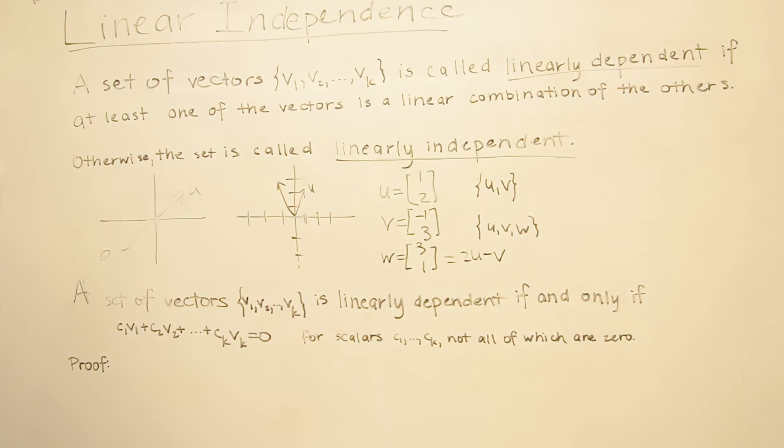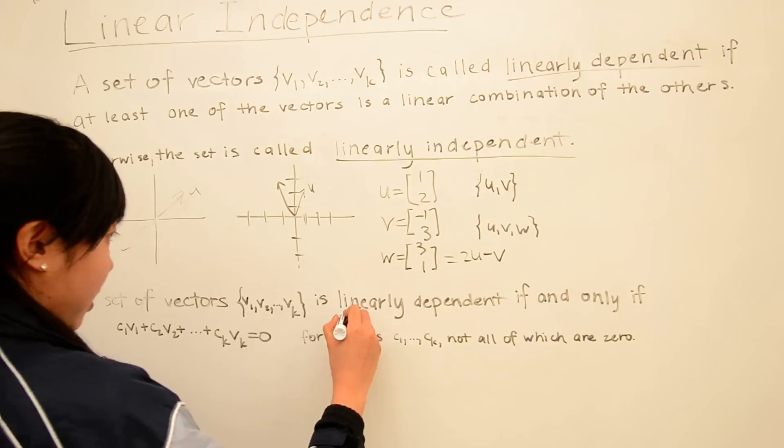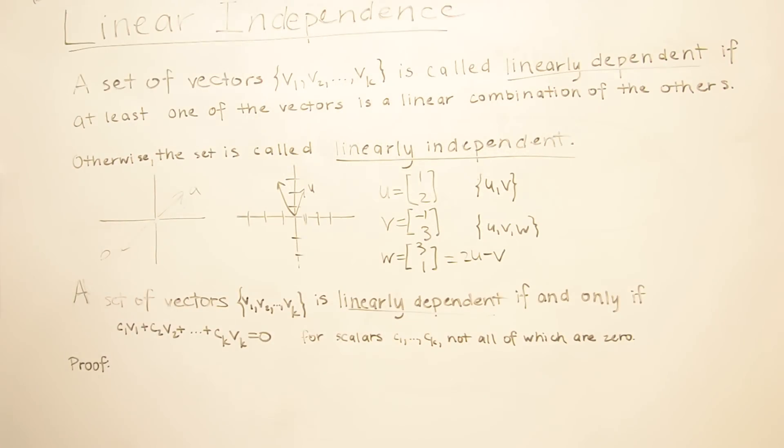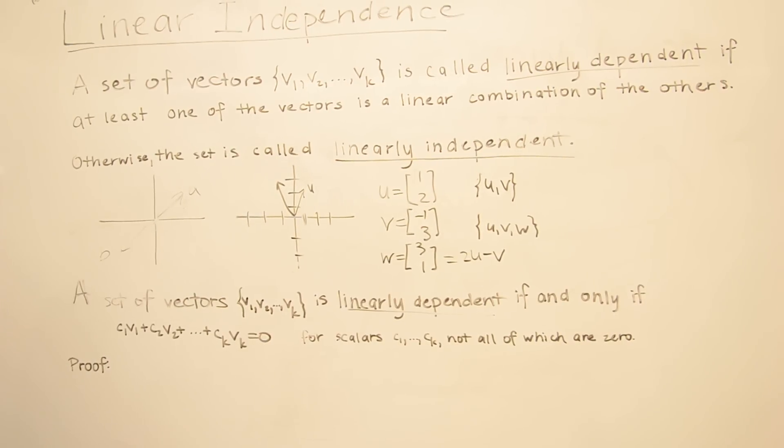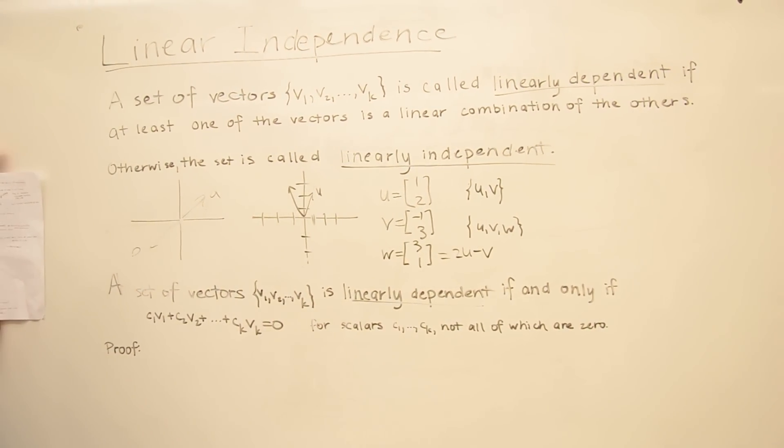Mathematically, we can also say that a set of vectors is linearly dependent if and only if this equation holds: c1v1 + c2v2 + ... + ckvk = 0, where c1 through ck are scalars, not all of which are 0. This also means that for a set of vectors to be linearly independent, if this equation holds true, all of the scalars c1 through ck must be 0.